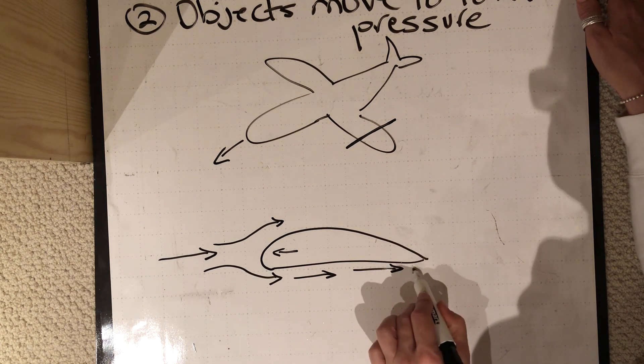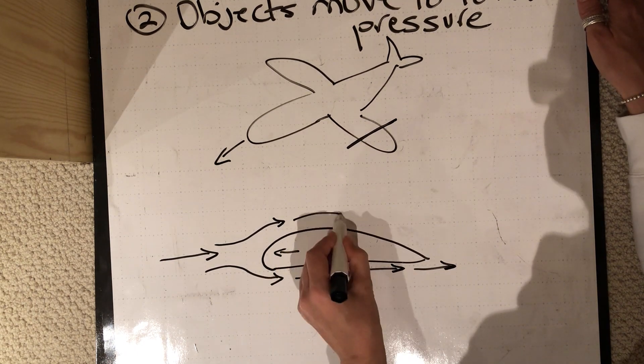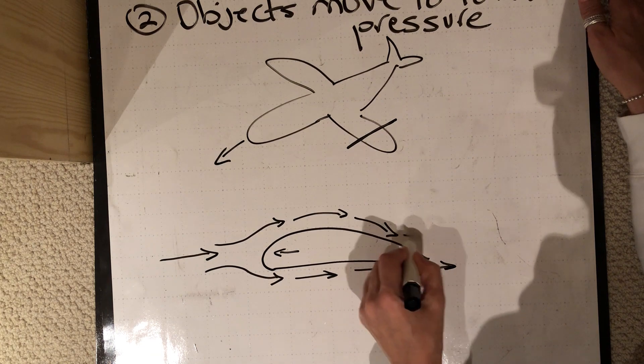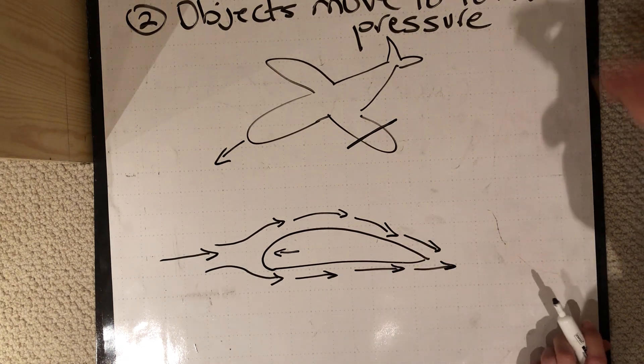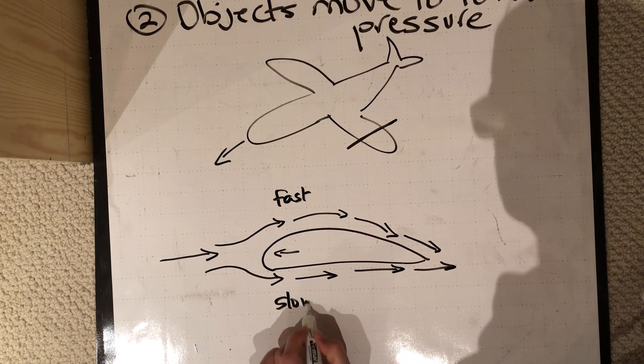So basically the air moves slower along the bottom, and because it has more distance to travel on the top, it actually has to move faster across the top. So this is fast moving air and this is slow moving air.